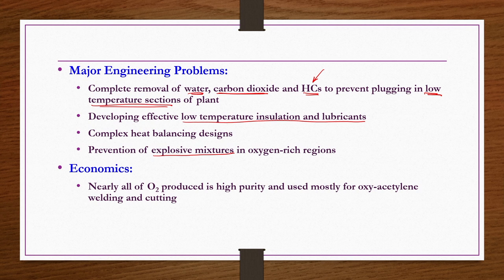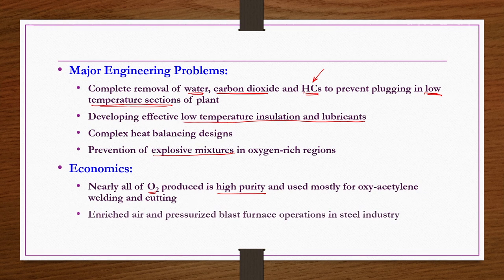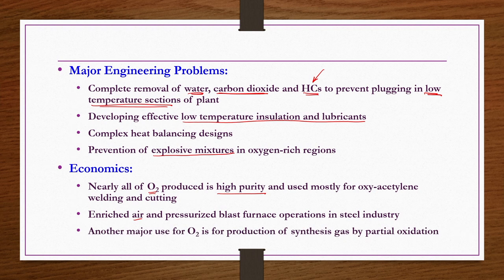Complex heat balancing design and prevention of explosive mixtures in oxygen rich regions are also major concerns. From an economics point of view, nearly all O2 produced is high purity and used mostly for oxy-acetylene welding and cutting. Enriched air and pressurized blast furnace operations in the steel industry also require oxygen. Another major use of O2 is for production of synthesis gas, and hydrocarbons by partial oxidation. Nitrogen is used for production of ammonia and several types of nitrogen fertilizers.